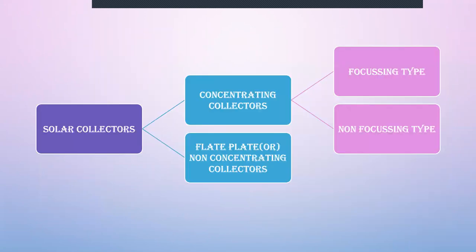What is a solar collector? A solar collector is a device that is used to collect solar radiation. Generally, solar collectors are divided into two types: concentrating collectors and flat plate or non-concentrating collectors. Concentrating collectors are further divided into focusing type and non-focusing type collectors.